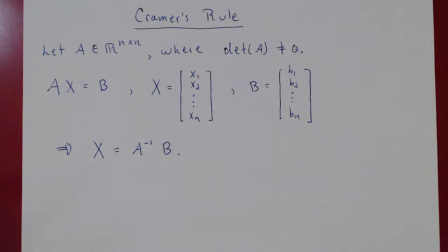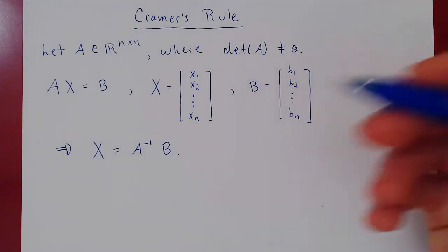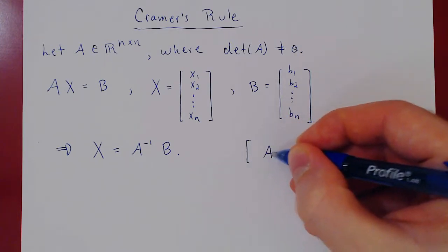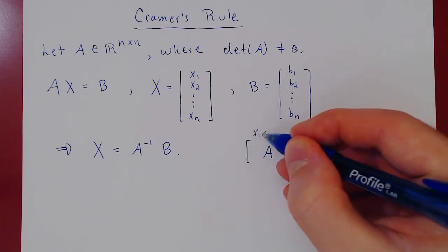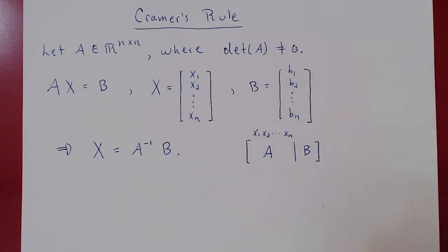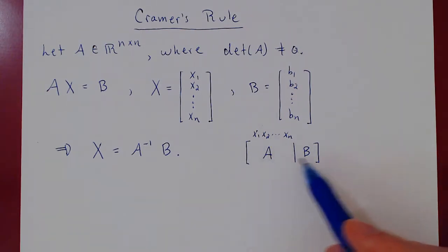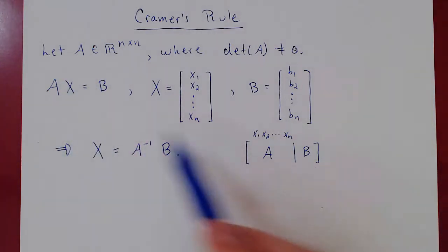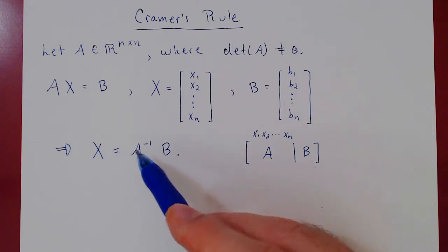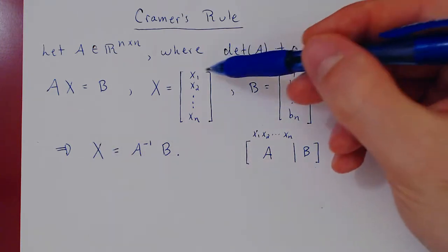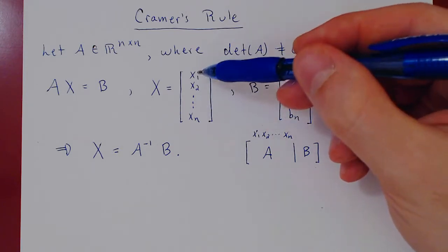So we can solve the system using A-inverse. We can also solve the system by building the augmented matrix, where A is the matrix of coefficients, b is the column of constants, and we label our columns for the variables. So we have two ways of solving: augment A with b and row reduce, or use A-inverse times b to give the unique solution vector x1, x2, up to xn.